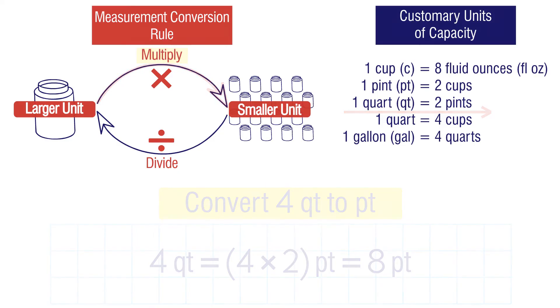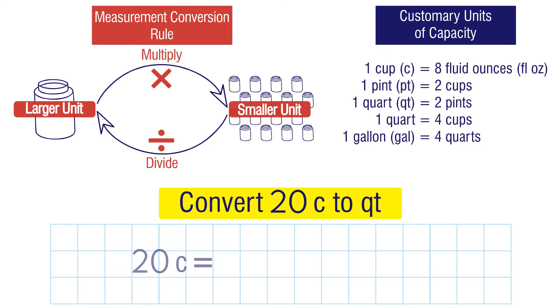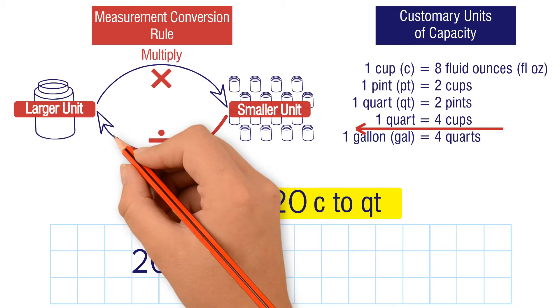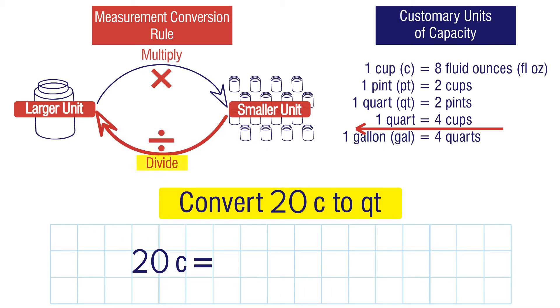Let's try another one. Convert 20 cups to quarts. We're going from smaller units to larger units, so we need to divide. One quart has four cups, so we divide 20 by four to get five quarts. So 20 cups is equal to five quarts.